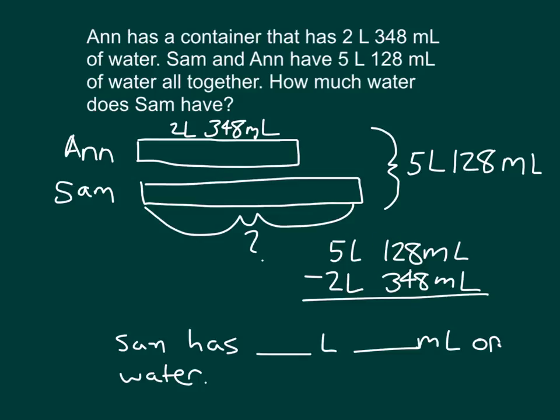So I have to regroup one of these liters back over to the milliliters. If I take one of these liters, the 5 becomes a 4, and that 1 liter becomes 1,000 milliliters. So I can write 1,128 milliliters. What I did is I renamed 5 liters, 128 milliliters, as 4 liters, 1,128 milliliters. And then I can do my subtraction.